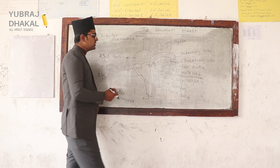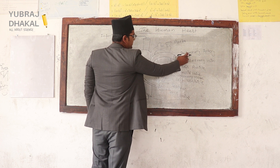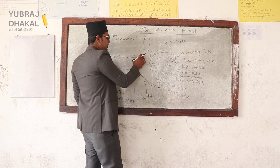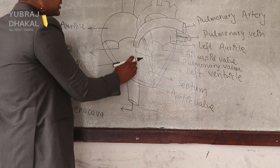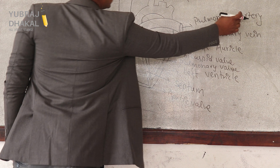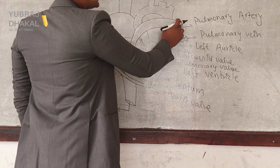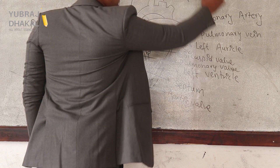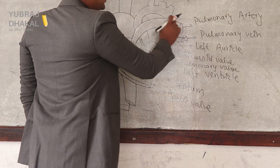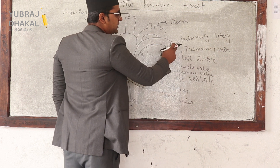Then once again, after contraction of the heart, that deoxygenated blood from the right ventricle goes towards the pulmonary artery through the pulmonary valve. The pulmonary artery carries the deoxygenated blood from the right ventricle through the pulmonary valve to the lungs.